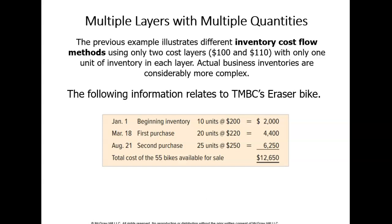Let's take a look at a transaction with more layers. Now we have a total of 55 bikes — 10 bikes in beginning inventory, 20 bikes purchased on March 18th at $2.20 per bike, and 25 bikes purchased on August 21st at $2.50 per bike. Total bikes available for sale: 55, with a total cost of $12,650. You should pause this video and write down this information because you'll need it for the next set of calculations.